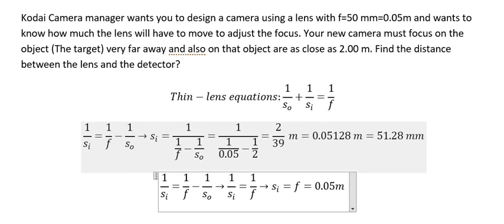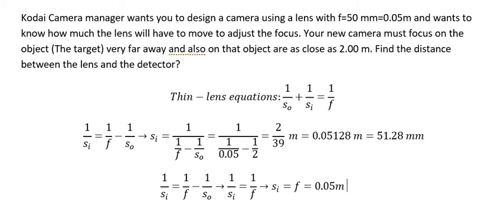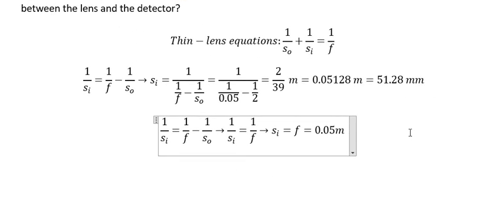The question asks for the distance between the lens and the detector. So the final answers are: approximately 51.28 mm when focused at 2 meters, and 50 mm when focused at infinity.